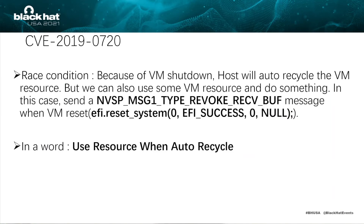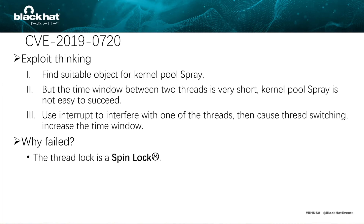The root cause of this vulnerability is a race condition. Because of VM shutdown, the VM will also recycle VM resources, but we can still use some VM resources while that recycling is happening. For example, in this case, sending a revoke_receive_buffer message when the VM resets — using resources while they are being auto-recycled. I think this is a tip for bug hunting. About exploit thinking: I should find a suitable object for kernel spray, but the time window between the two threads is very short, and kernel pool spray is not easy to succeed. I thought maybe I should use an interrupt to interfere with one of the threads to cause thread switching and increase the time window, but the lock is a spin lock, so I can't do that.